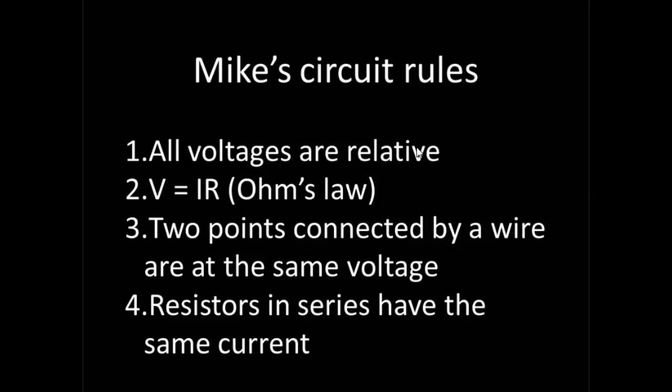Rule number one is all voltages are relative, and I'll explain that more in a minute. Rule number two is just Ohm's Law, V equals IR. Rule number three, two points connected together by a wire are at the same voltage, which you can actually get right from Ohm's Law. If a wire has zero resistance, then the voltage drop across the wire is zero. So any two points connected by that wire have to be at the same voltage.